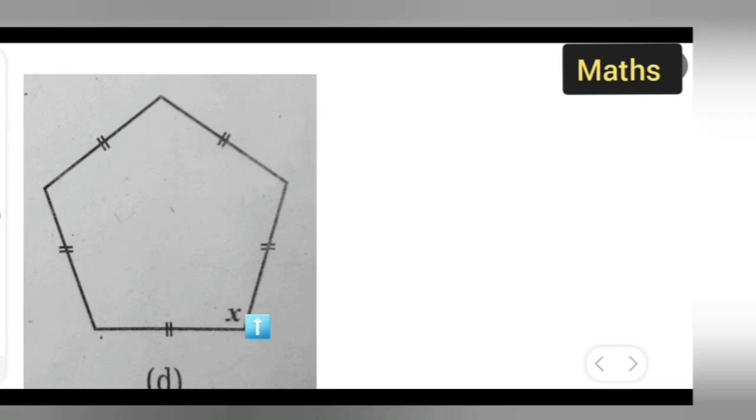So all will be x. One, two - here this will be x. This side it will be again x. This side also it will be x. So here, how many x are there? One, two, three, four, five x are there.